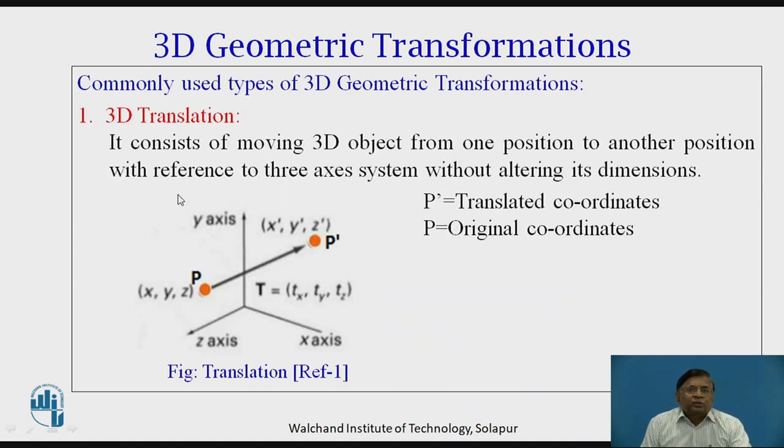Coming to first transformation of 3D translation, here as indicated in the figure, P is the initial position, original position of the given point with the x, y, z coordinates in 3 dimensional representation. P dash is the new translated position of the point. And this T as a matrix would give you the translational distances.